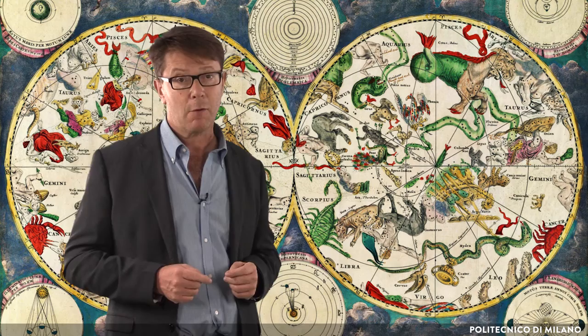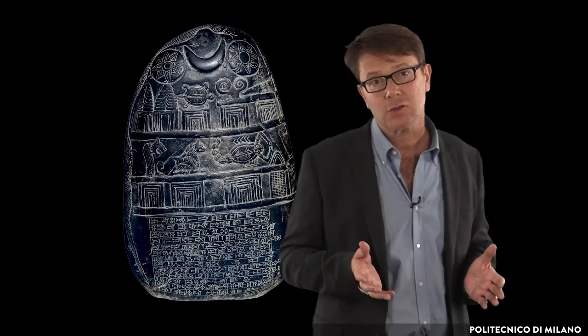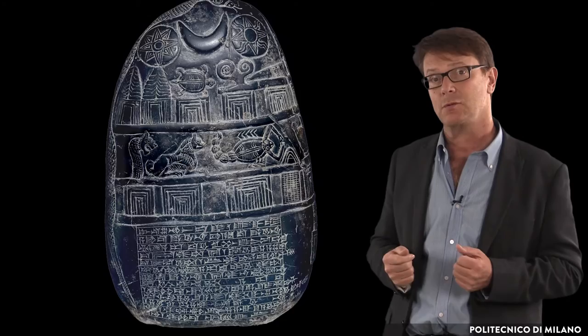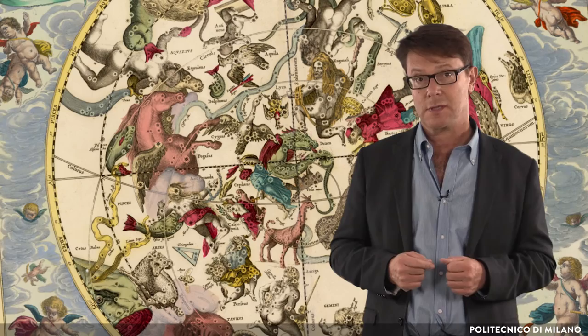Our constellations came down to us from the Greeks and the Romans, but originated in the Near East. In this boundary stone of the 12th century BC, for instance, we see the constellations Draco, Leo and Scorpio. Forty-eight constellations were codified by Ptolemy in the 2nd century AD, and others were added in modern times.